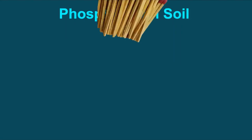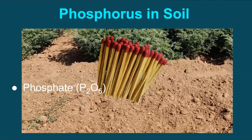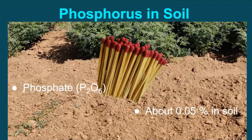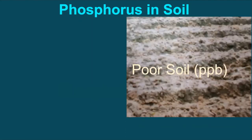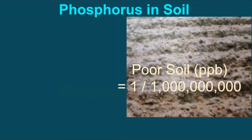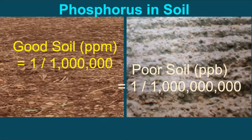Phosphorus is a reactive element, hence exists in the form of complex compound that is phosphate. The phosphorus level in the soil is about 0.05%. The concentration of soluble phosphate in soil solution is usually very low. Normally, in case of poor soil, it is one part in a billion, while in case of good quality soil, that is fertile soil, it is one part per million.